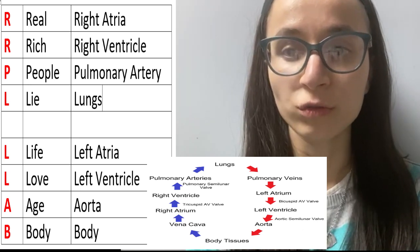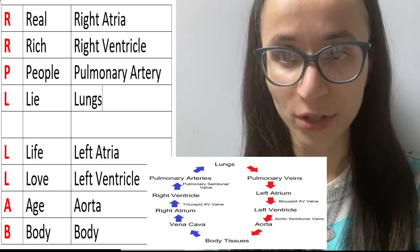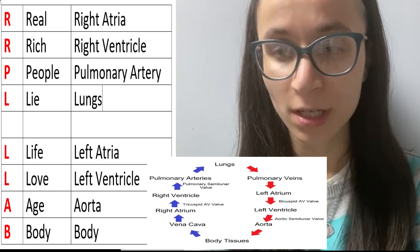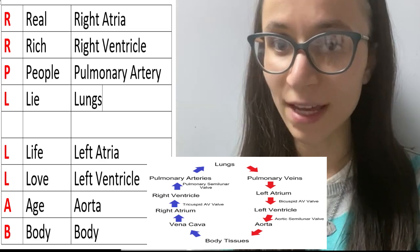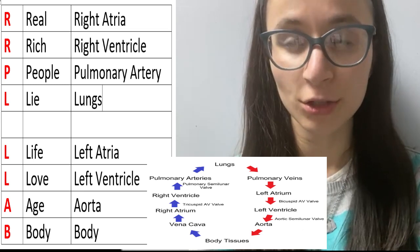So for Real, that corresponds to right atrium. Everything starts in the right atrium. So the blood goes from the inferior vena cava or superior vena cava to the right atrium.